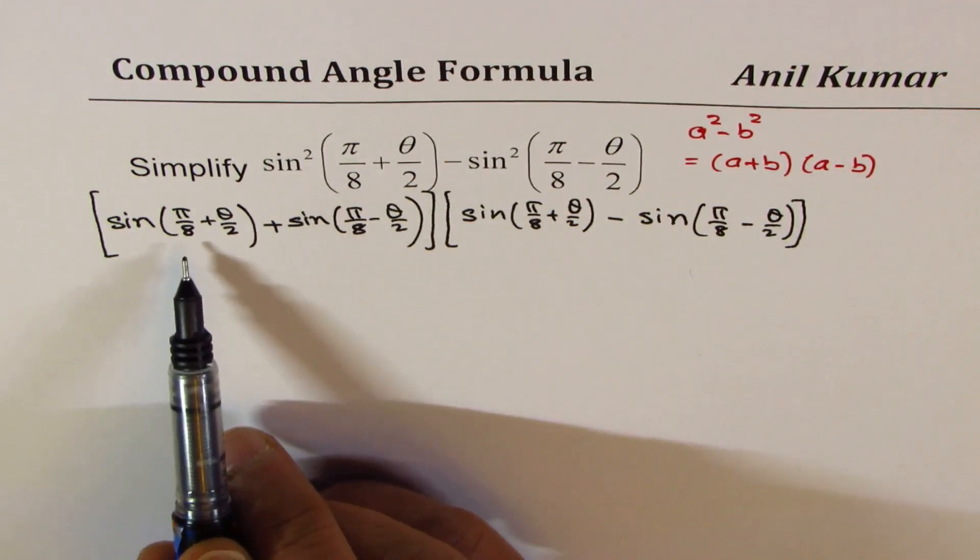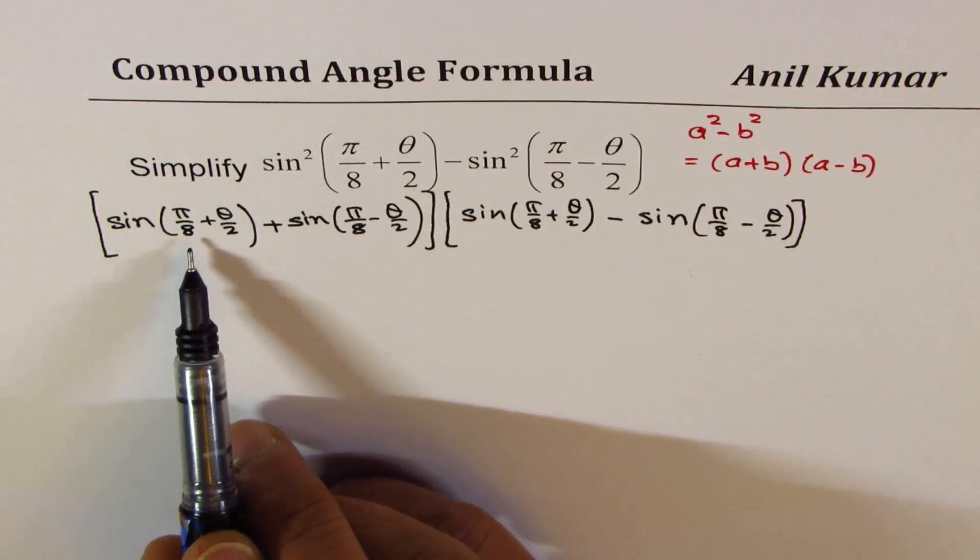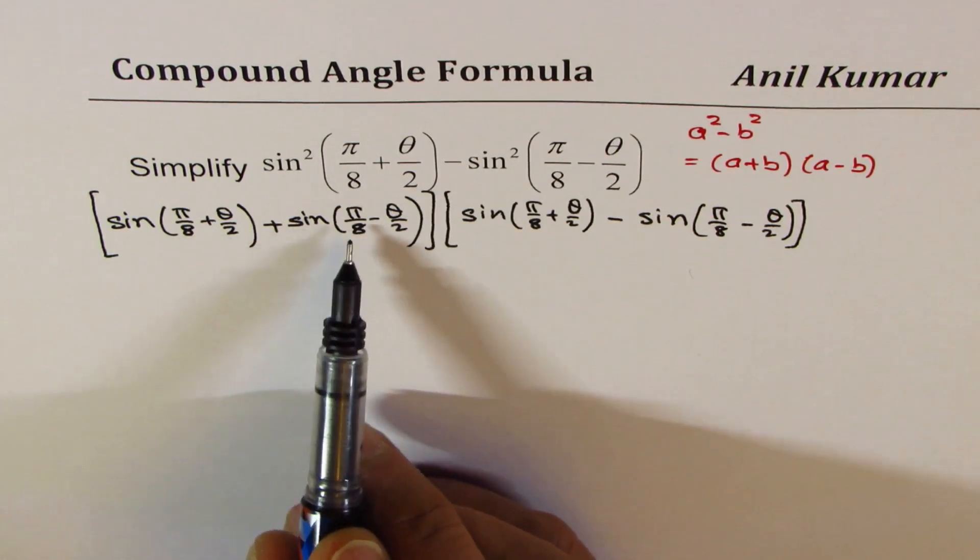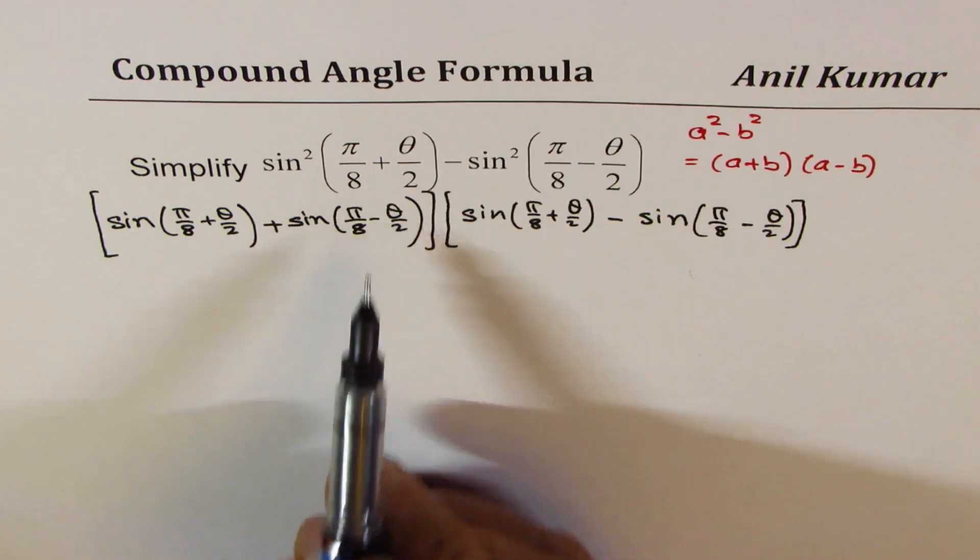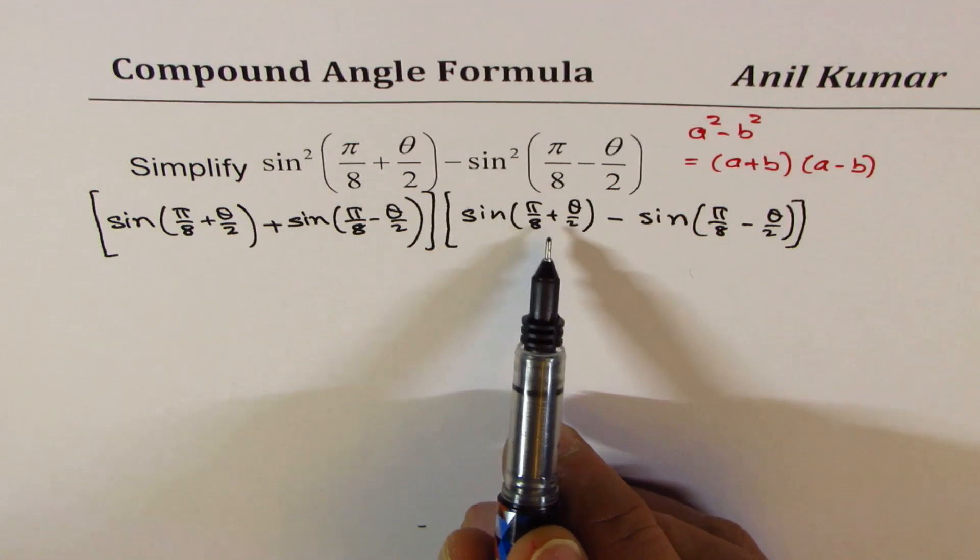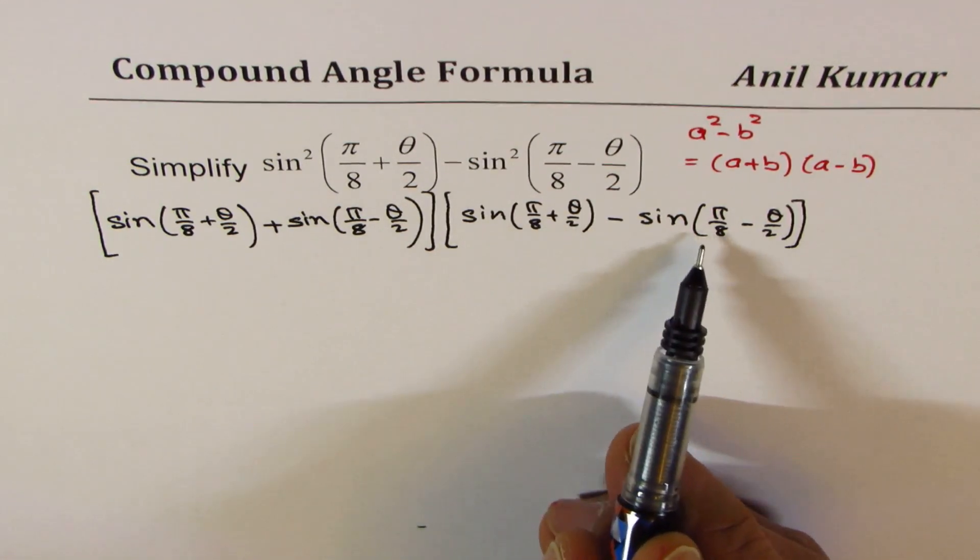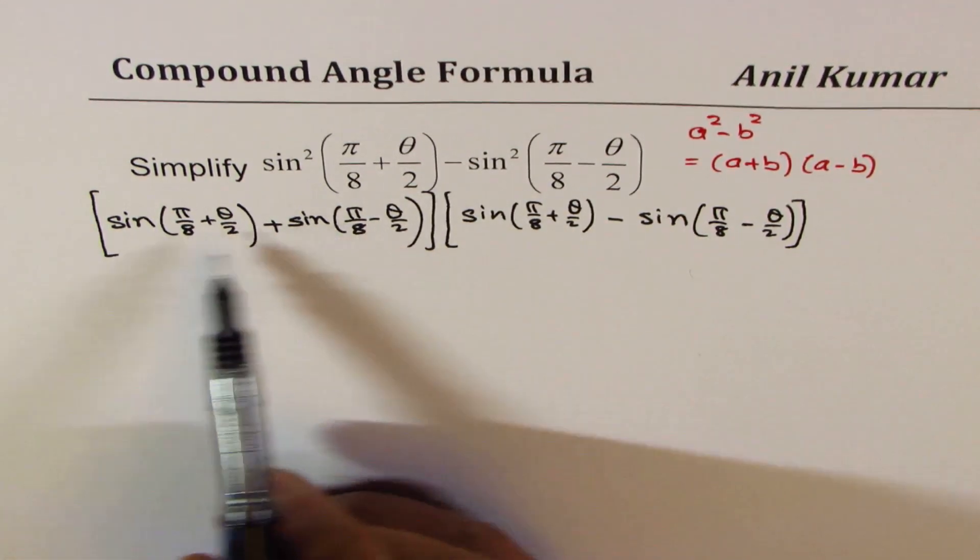Now, this is like sin(a+b) + sin(a-b), right? And here we have sin(a+b) - sin(a-b). Now, what is this equal to?